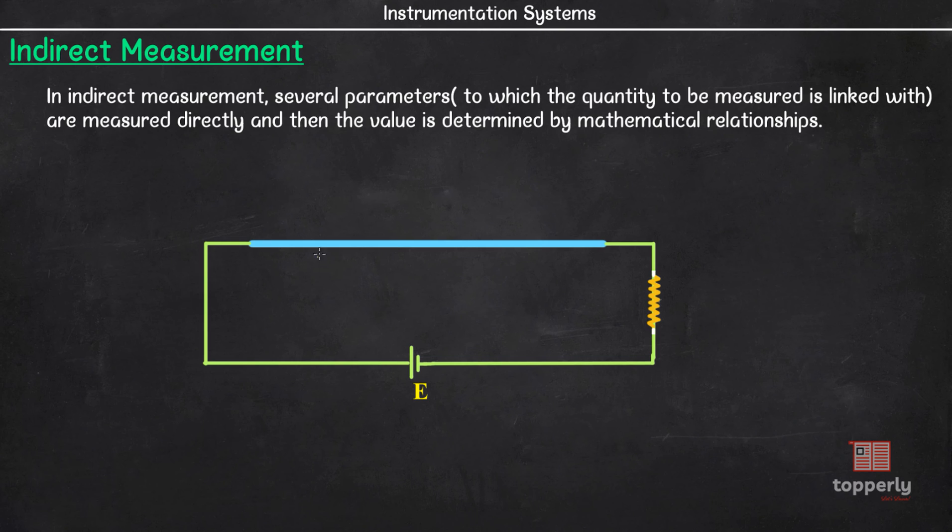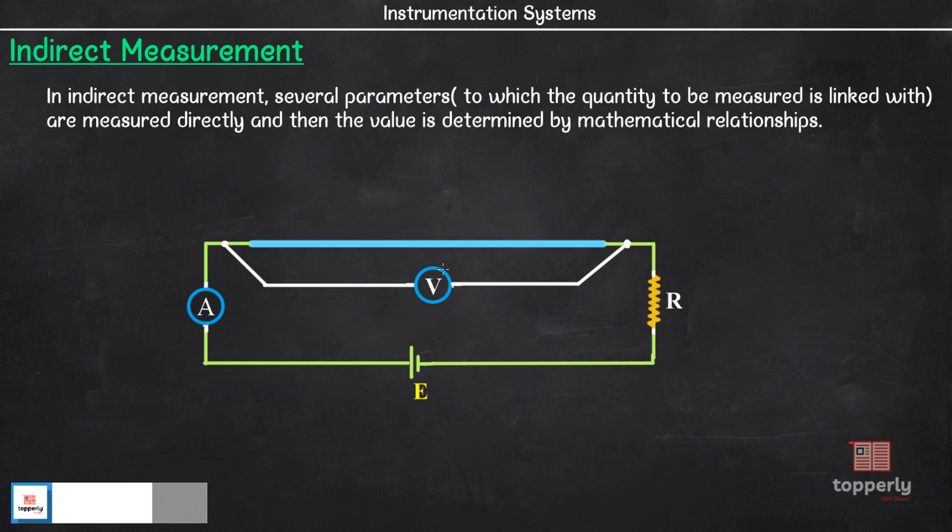Here, let us say we are measuring the resistance of this blue conductor. We cannot directly measure the resistance. To measure the resistance, what we are doing is we measure the current through the conductor using an ammeter connected in series. Also, we measure the voltage across the conductor using a voltmeter. So, we got the voltage readings from the voltmeter and the current readings from the ammeter. Then we use Ohm's law V = IR or R = V/I to calculate the resistance of the conductor.